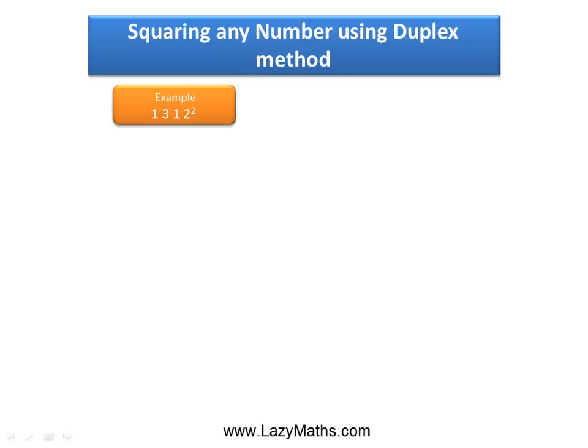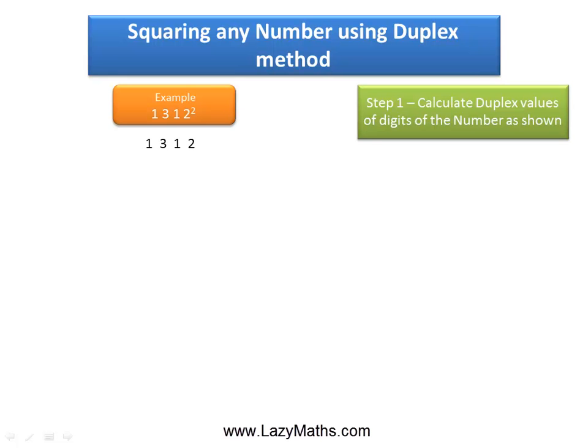Here's an example of squaring any number using the duplex method, 1312 squared. The first step is to calculate the duplex values of the different digits of the number as shown below.